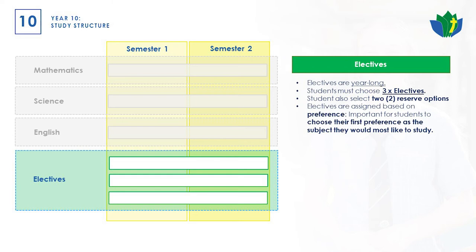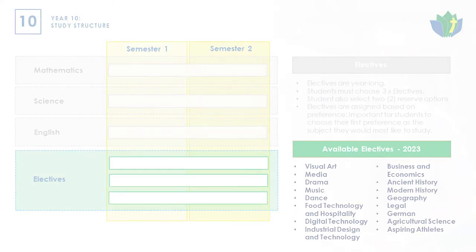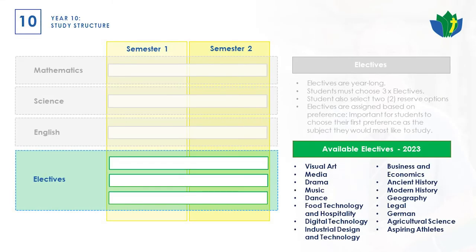Students can also have two reserve options and again, it's important to list them in order of preference — preference one being the most important, then preference two, preference three, and then two reserves. HPE is not compulsory in Year 10, but there are aspiring athletes options available. You can see the full range on the screen, and the curriculum guide lists all of these subjects with more information about what students would be doing in each one.